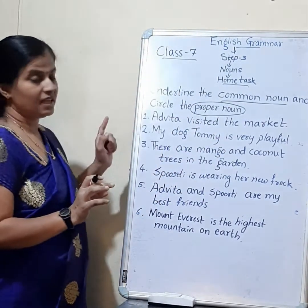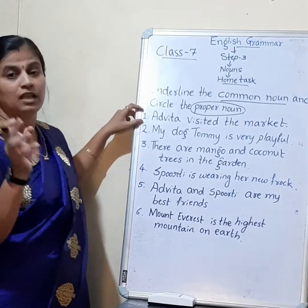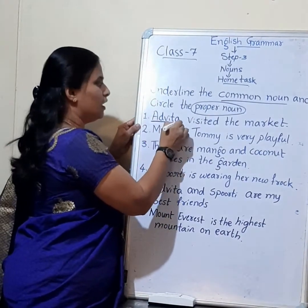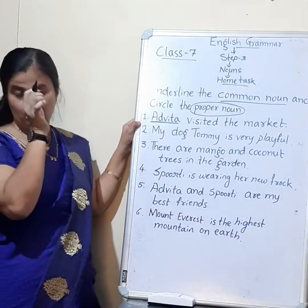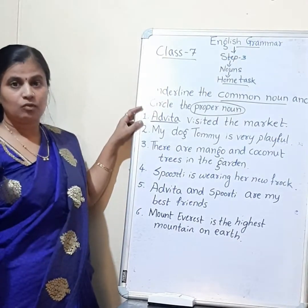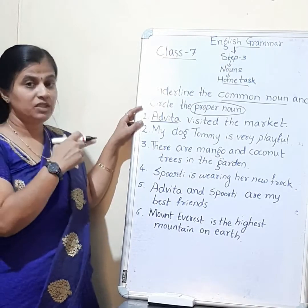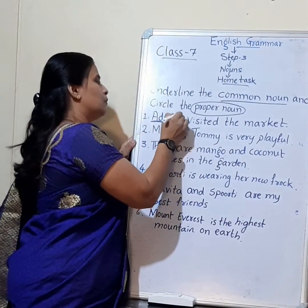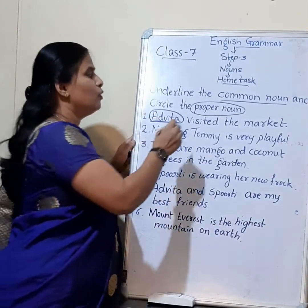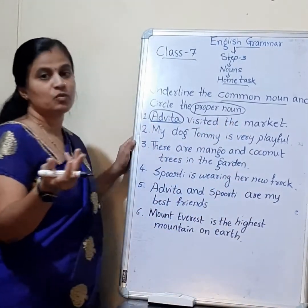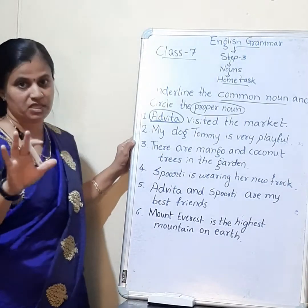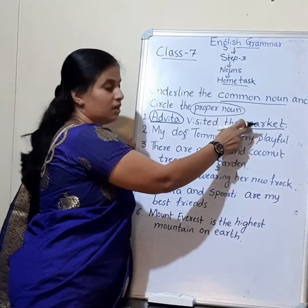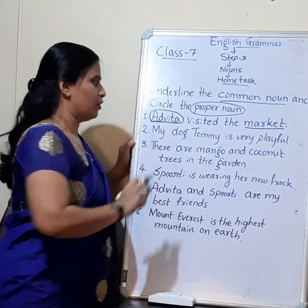Let me underline the common noun and encircle the proper noun. Here, 'Advita' is a specific name of a person or a girl, so it is a proper noun. The word 'girl' would be a common noun. But Advita is a specified person, so Advita is a proper noun. And 'market' — we don't know which market she visited; the name is not mentioned — so market is a common noun. I have underlined the common noun and encircled the proper noun.